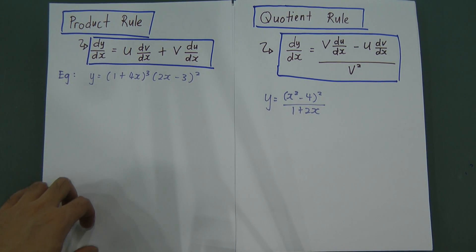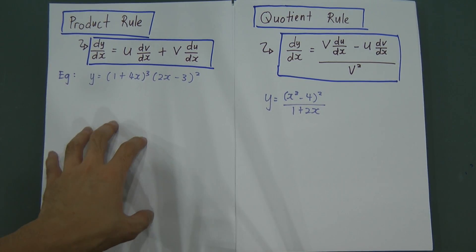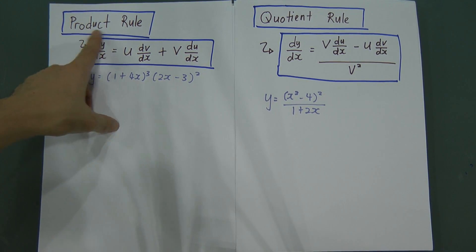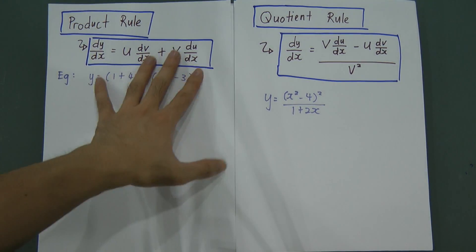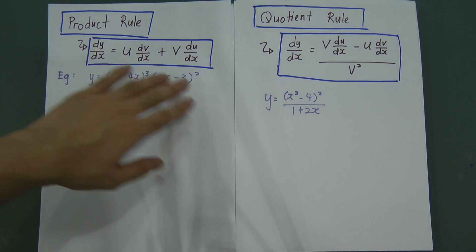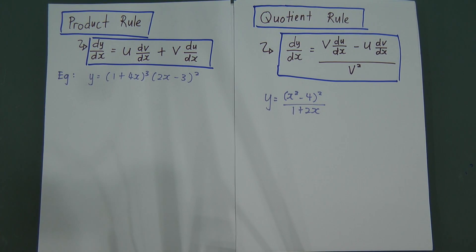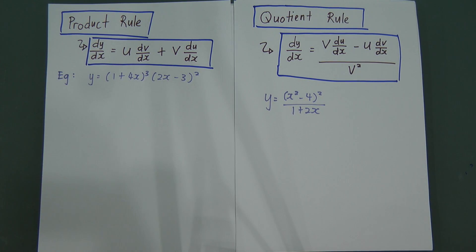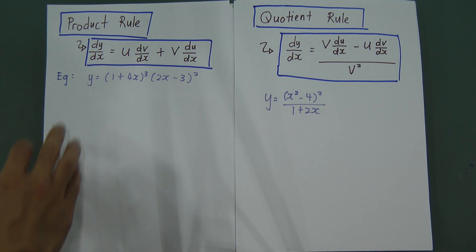I will explain two somewhat complicated rules in the differentiation chapter. One is what we call the product rule and the other one we call the quotient rule. These rules are not very special — they tell you how to differentiate when equations look very complicated and hard to handle. Let's have a look at the first one.